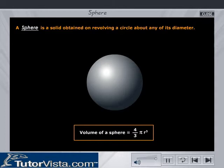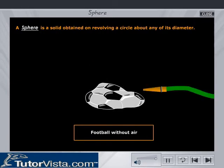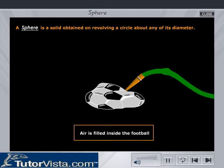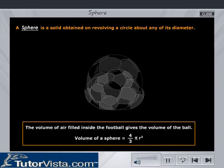The volume of a sphere is given by 4/3 π r³. Consider a football as a sphere. Fill air into a deflated football. The volume of air filled inside gives the volume of the ball.